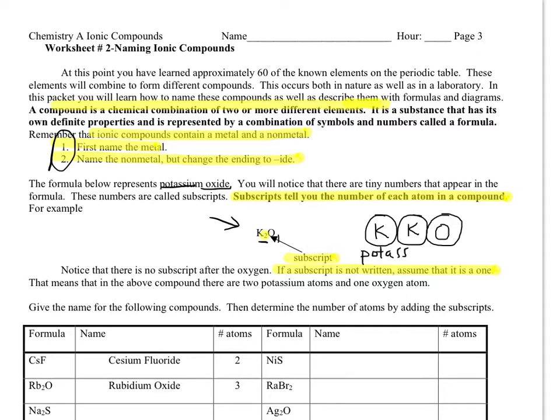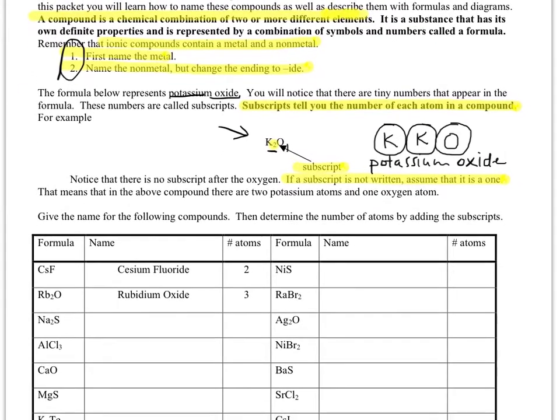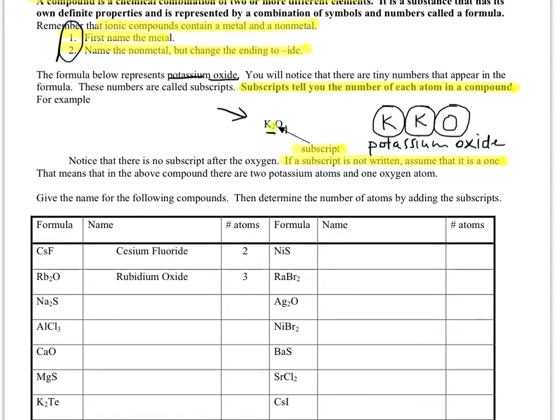We would call this potassium—the name of the metal doesn't change—and then instead of oxygen, oxide, because we add that -ide ending to the end. So there are some examples here. If we look at this formula CsF,